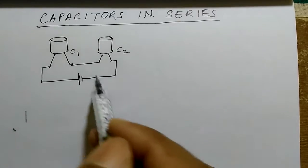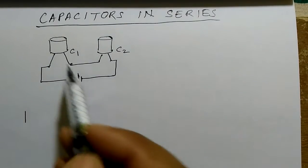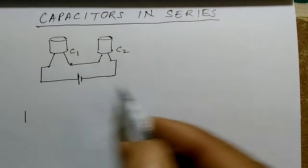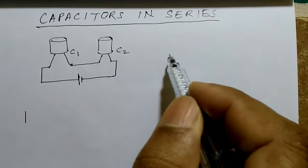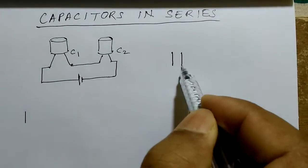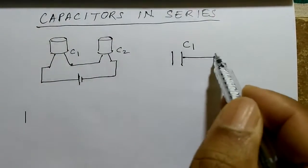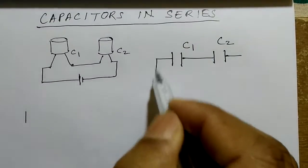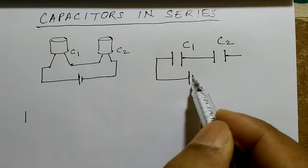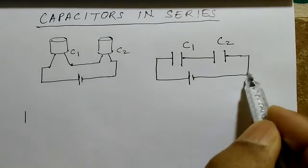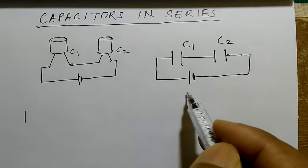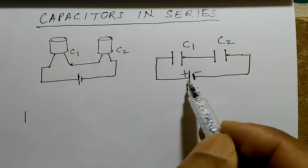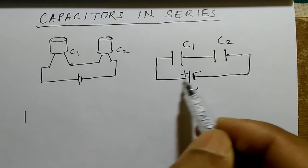In symbol, this is C1, C2. This P is the potential difference of the battery. This connection...